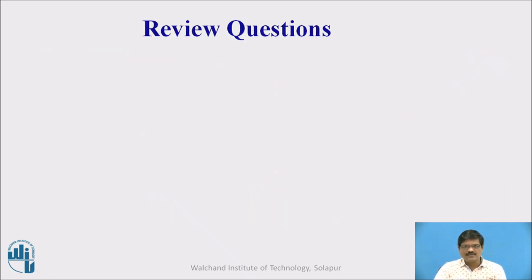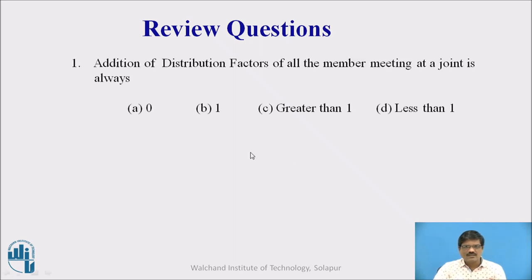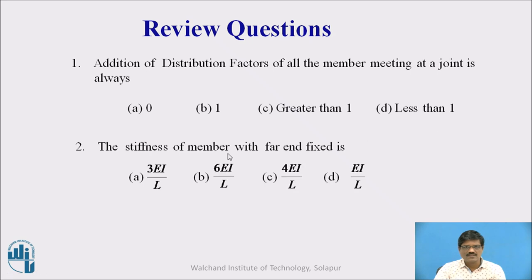Before we proceed further let us go for some review questions. So I request you to take a pause and answer these questions. Addition of distribution factor of all the members meeting at a joint is always equal to - four options are there. The second question is the stiffness of member with far end fixed is - four options. So you think over it, get the answer and then resume the video.